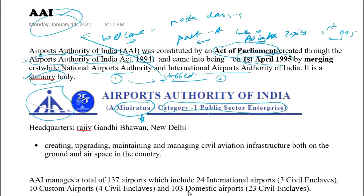Since Airports Authority of India was started in 1995, the department has recently completed 25 years, and they have released a special logo to mark 25 years. The headquarters of Airports Authority of India is at Rajiv Gandhi Bhavan, New Delhi.